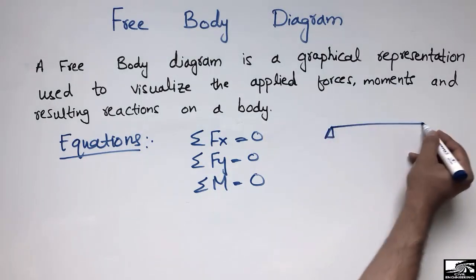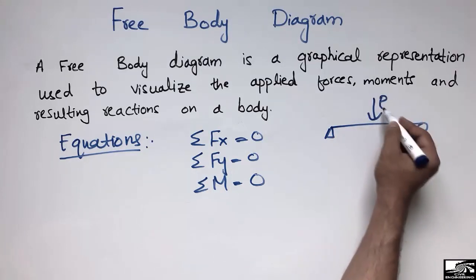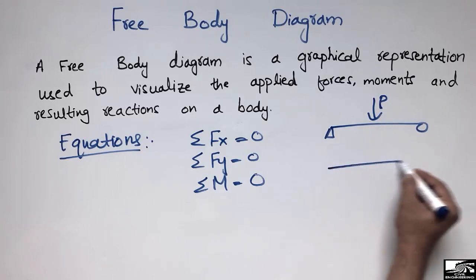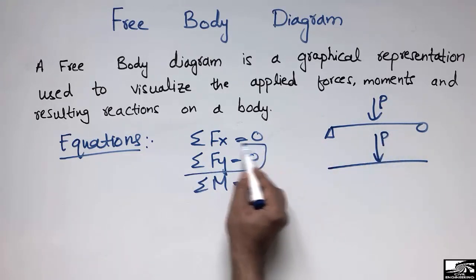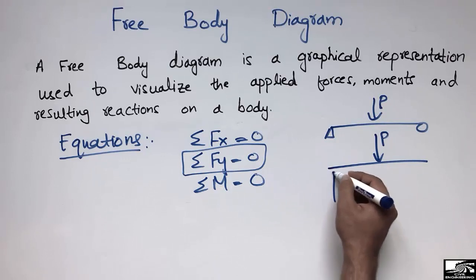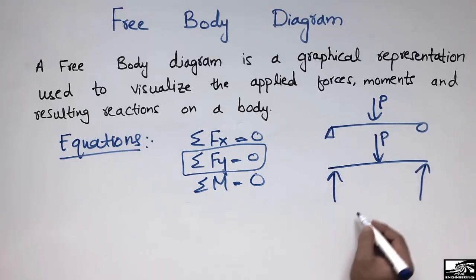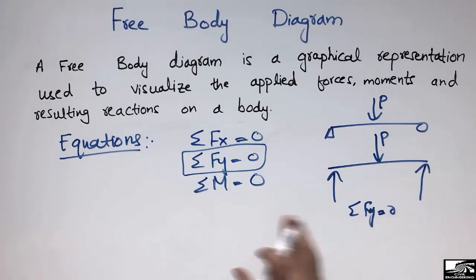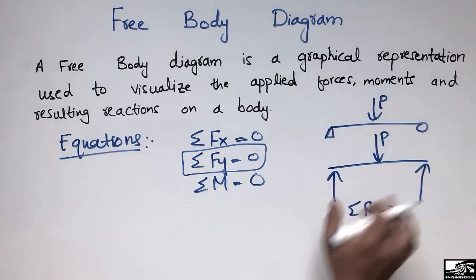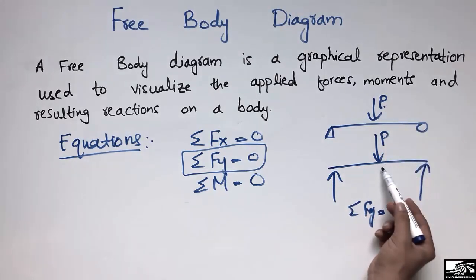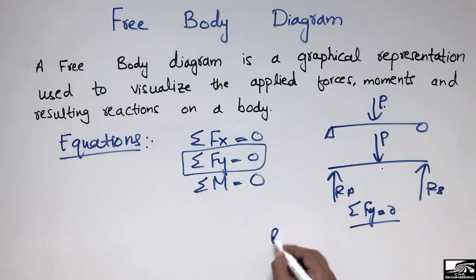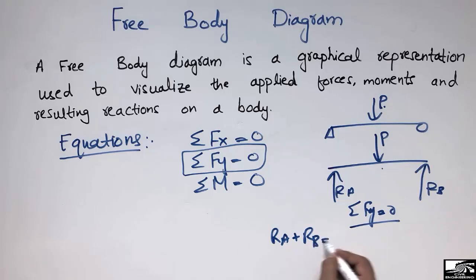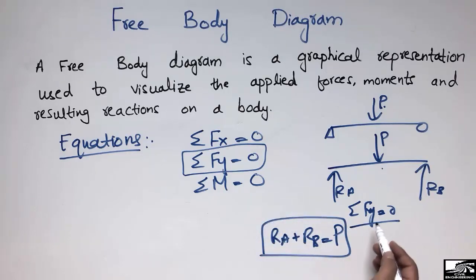For example, consider the simply supported beam with load P acting at the center. Since P is a vertical force, the summation of vertical forces must be zero. The vertical force is resisted by the two supports RA and RB, so: RA + RB = P. This means the summation of all vertical forces equals zero, and the supports together resist the full applied load.